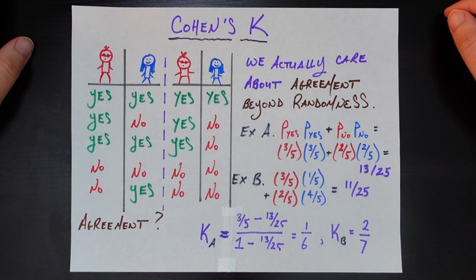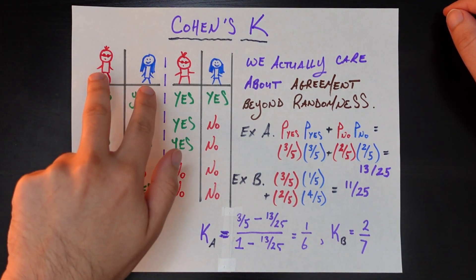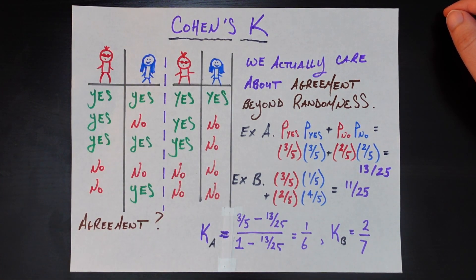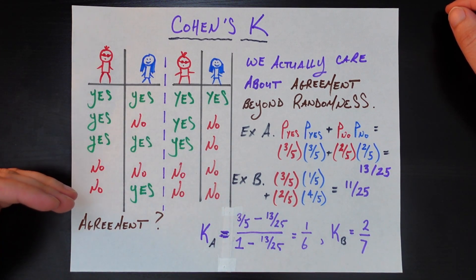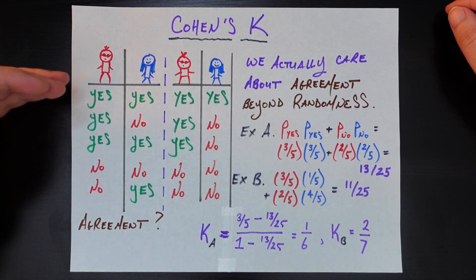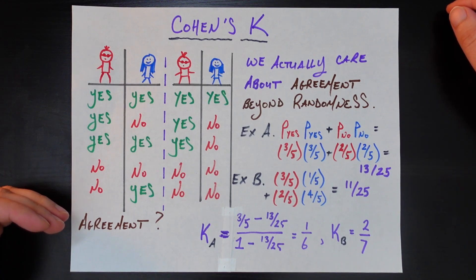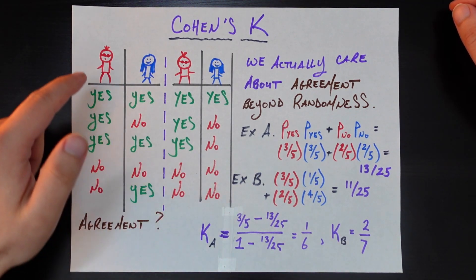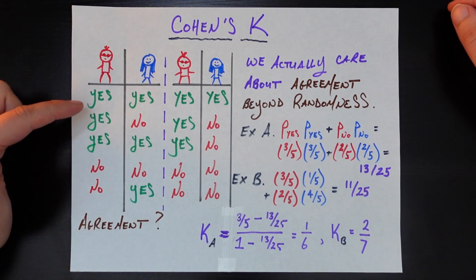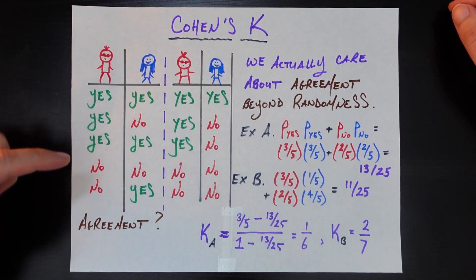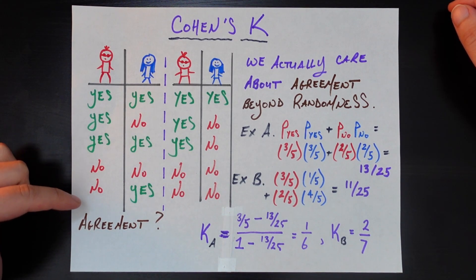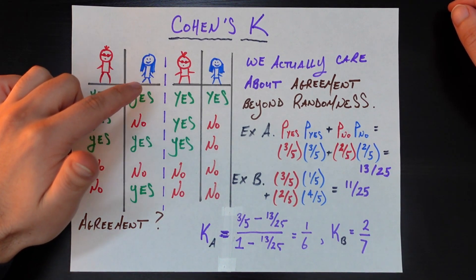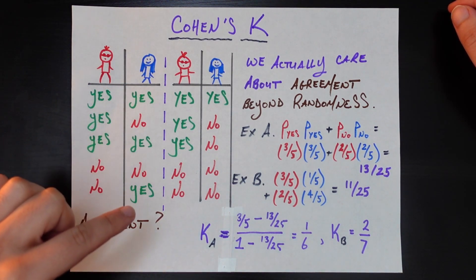Let's say that you're trying to hire a new person for your company, and you have two people on the board making the decision on whether to hire a person or not. Each row in these tables is going to be for a candidate — you have five candidates you're considering. Mr. Red gave the first candidate a yes, second yes, third yes, fourth and fifth no. Mrs. Blue said yes, no, yes, no, yes.